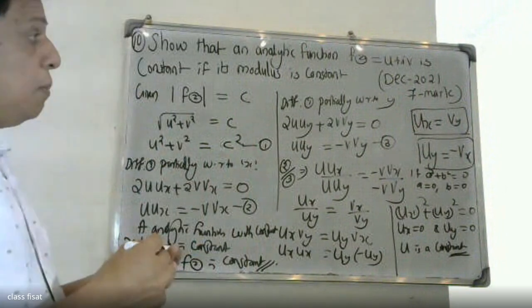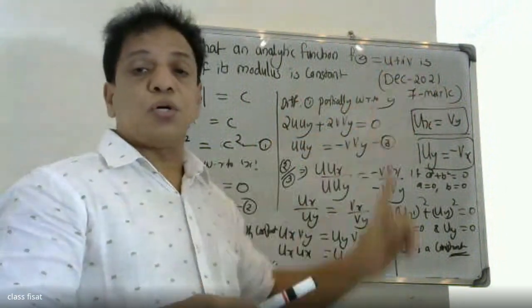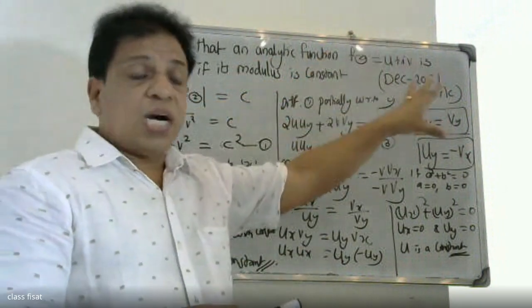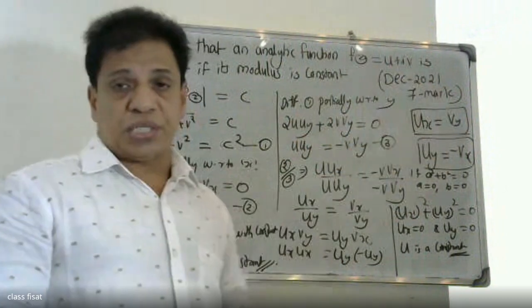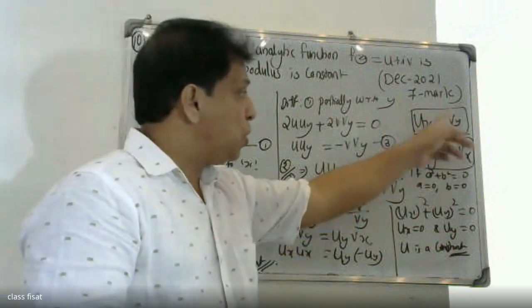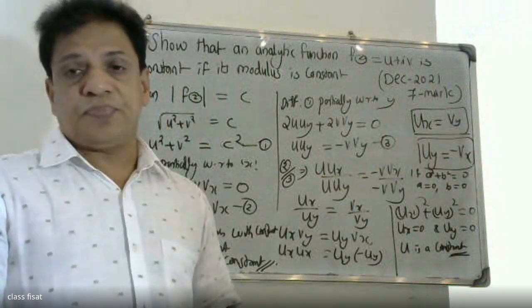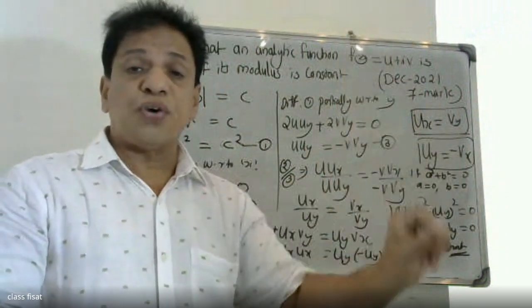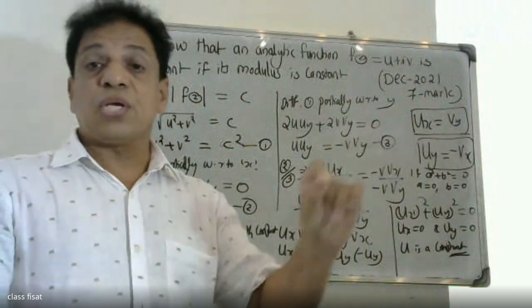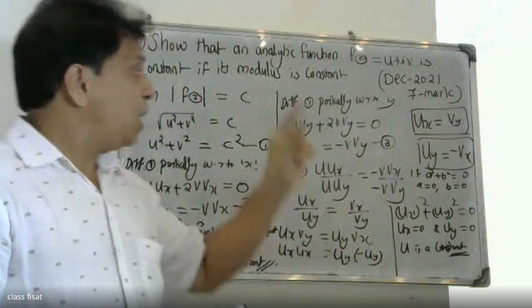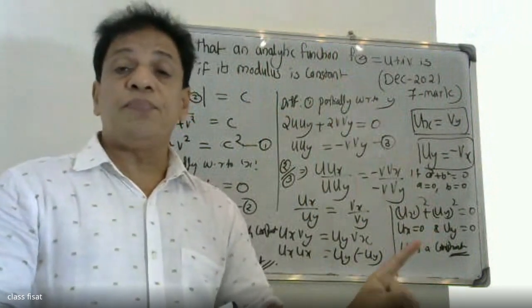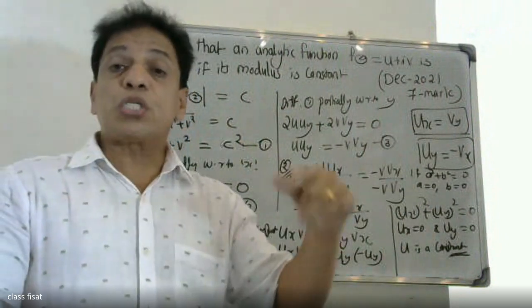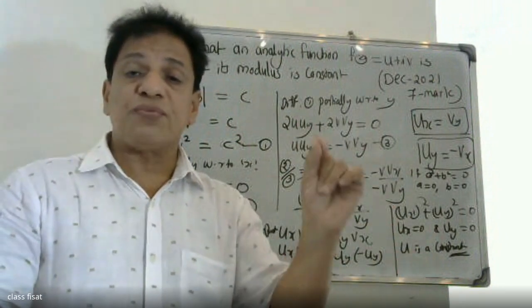This problem carries 8 marks. Let me go through it again. Since f(z) is analytic, it must satisfy the Cauchy-Riemann conditions. Given that the modulus of f(z) is constant, we write |f(z)| = c. With f(z) = u + iv, the modulus is √(u² + v²) = c. Squaring: u² + v² = c². That is equation 1.